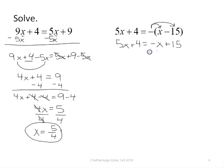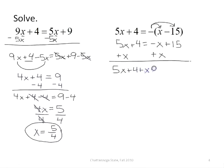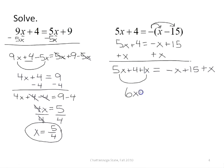Once again I have x on both sides, so I want to get rid of one of the x's. Since it's a negative x, I have to add x to both sides of the equation. That gives me 5x plus 4 plus x on the left side, and negative x plus 15 plus x on the right side. Collecting like terms: 5x plus x is 6x, remembering that x has an understood 1 in front of it. I still have my plus 4. On the right, negative x plus x adds up to 0, so I get 15.